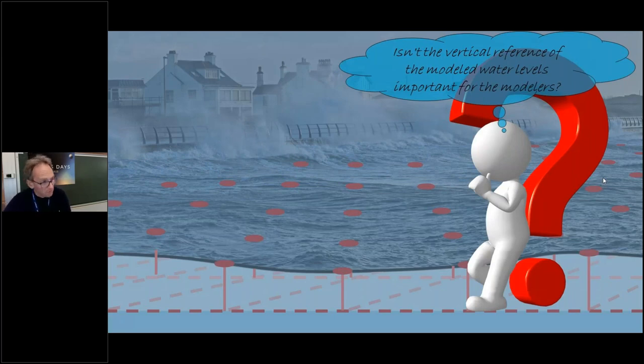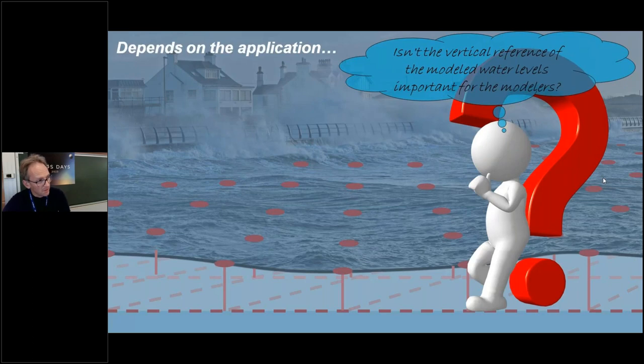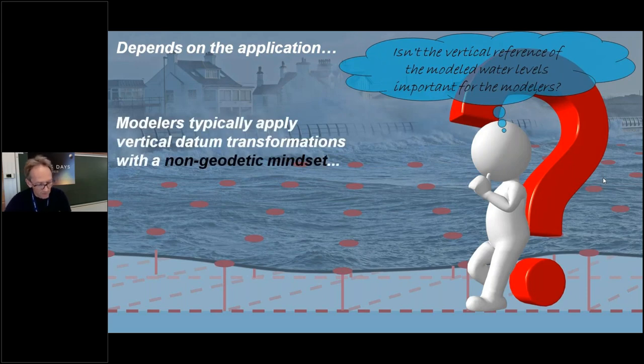Now you may wonder: isn't the vertical reference of the model water level important for the modelers? Well, there's a long story for this. First of all, this depends on the application and the way you evaluate your model output. Modelers have a whole bunch of strategies available how they can avoid these kind of issues. But definitely there are a number of applications for which the vertical reference does matter, and they typically apply these vertical datum transformations with what I would refer to as a non-geodetic mindset.